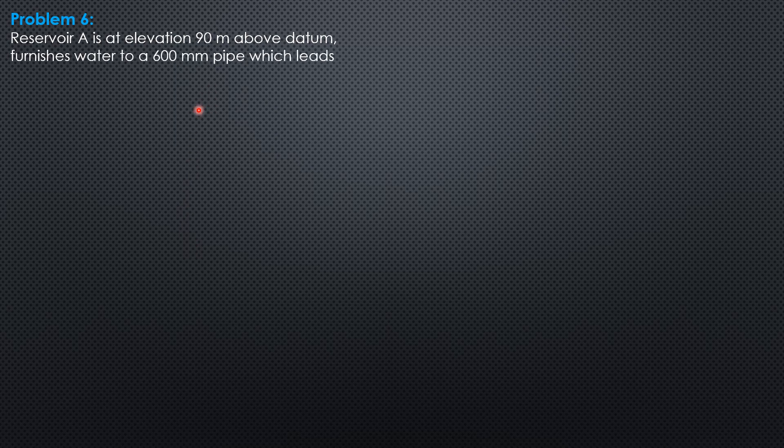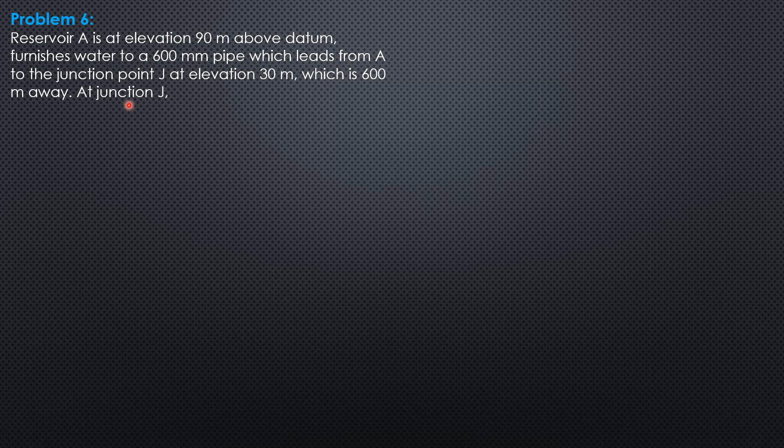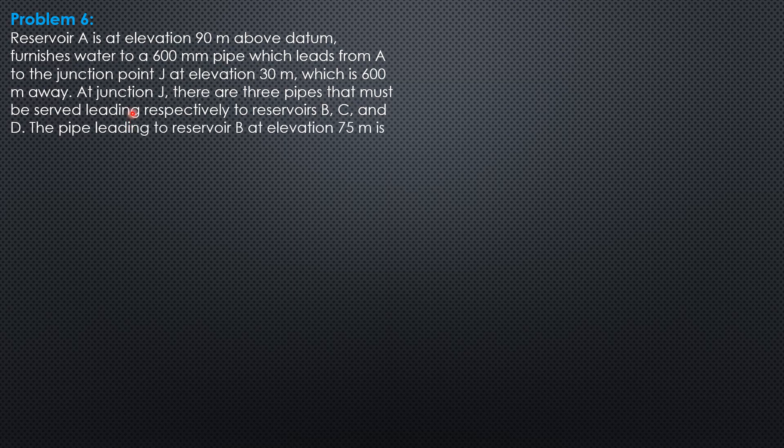Example 6. Reservoir A is at elevation 90 meters above datum, furnishes water to a 600 mm pipe which leads from A to the junction point J at elevation 30 meters, which is 600 meters away. At junction J, there are three pipes that must be served.